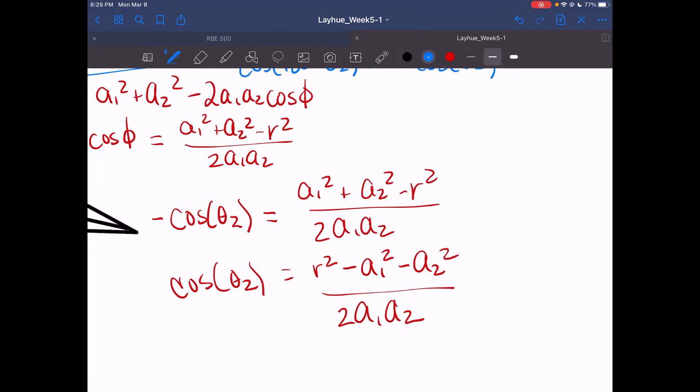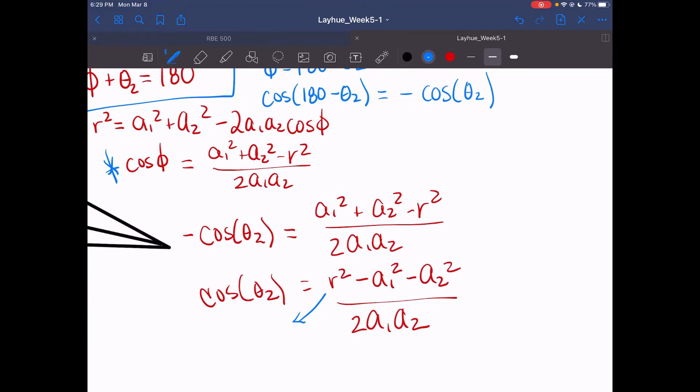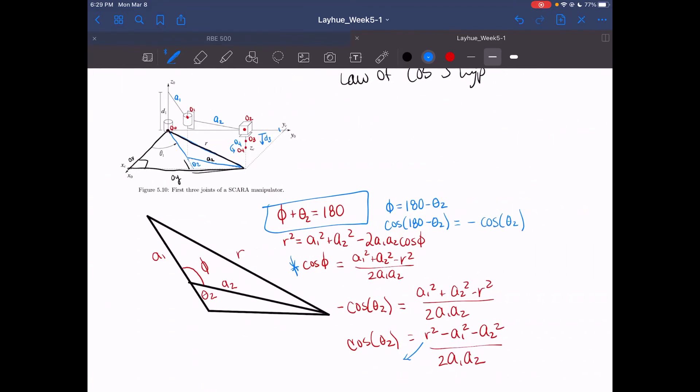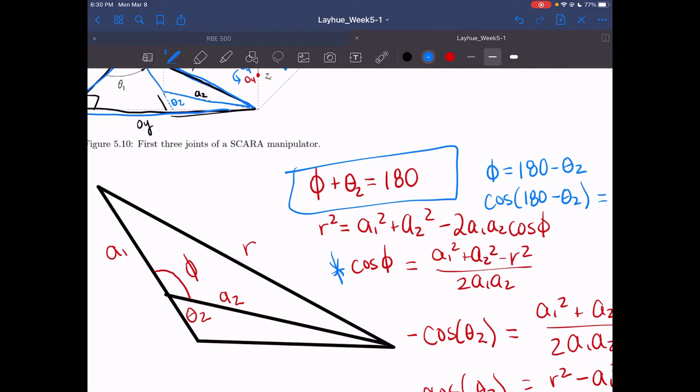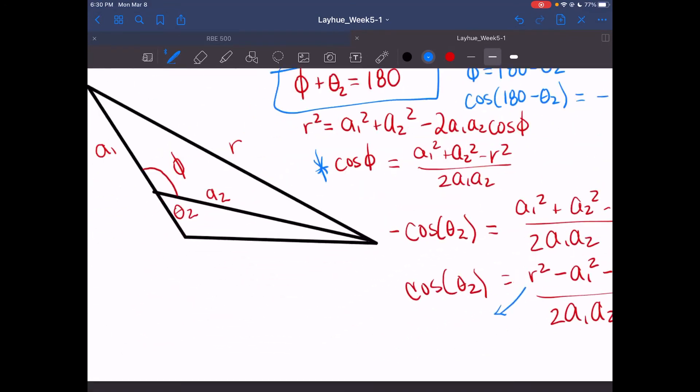And then lastly, our product is cosines of theta2 equals r squared minus a1 squared minus a2 squared all over 2a1a2. As said in the beginning, we can solve for r.